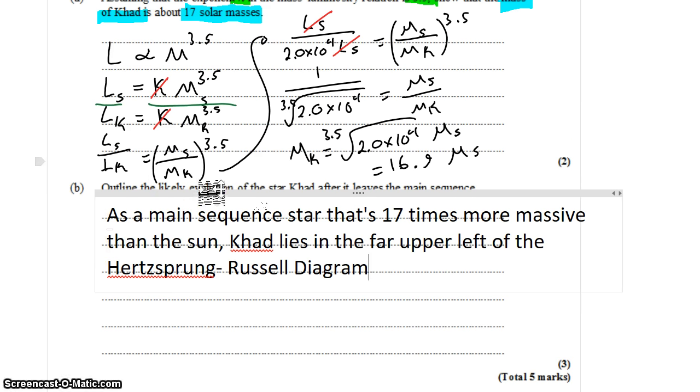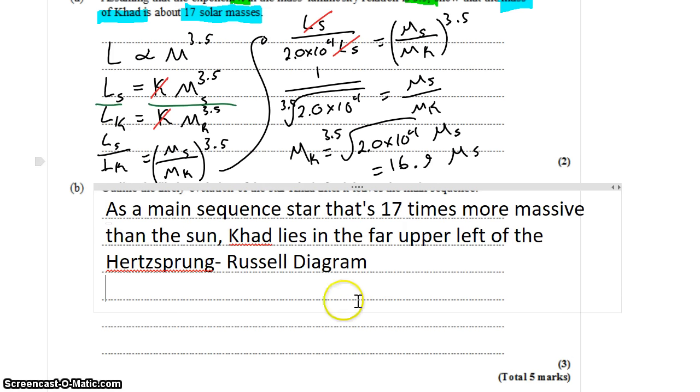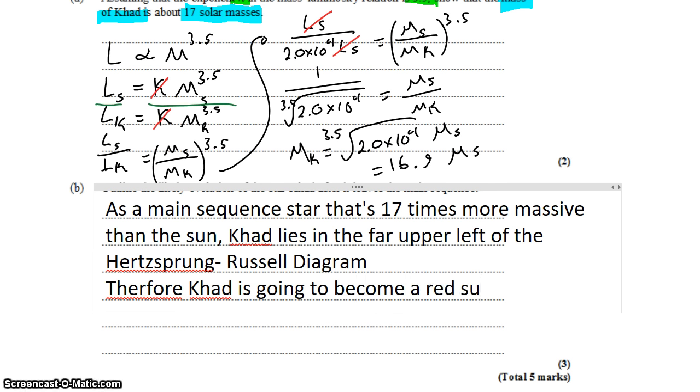And what that means is that CAD is going to become a red supergiant once it starts entering the next phase of its life.